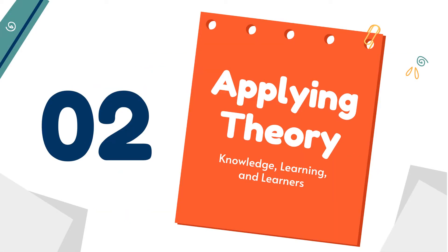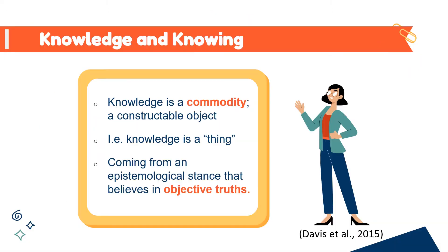Knowledge, learning, and learners. Let's start off by talking a little bit about knowledge and knowing — and of course, if you want to hear more about this, please see my previous video. Within standardized education, knowledge is a commodity and a constructible object. In short, knowledge is a thing. We're coming from an epistemological stance that believes in objective truths, and this is going to be really important when we get to our piece on assessment.